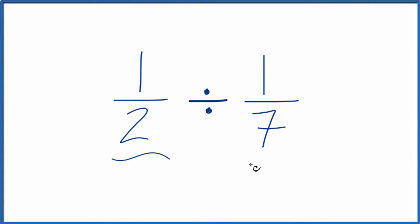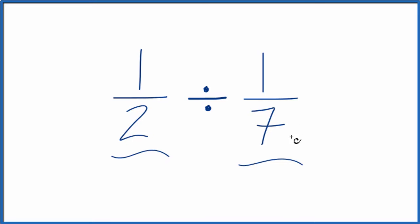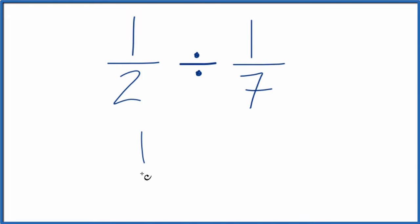If you need to divide 1 half by 1 seventh, here's how you do it. What we'll do is we'll start with 1 half, but instead of division, we're going to multiply by the reciprocal of 1 seventh.